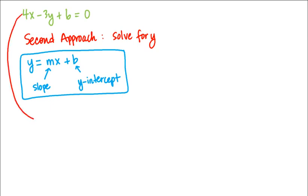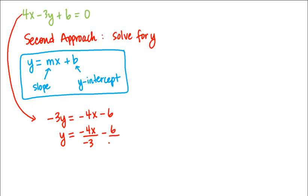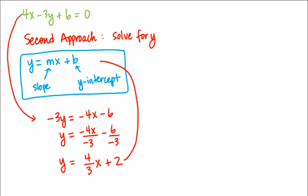So let's solve our equation for y. We have negative 3y is equal to negative 4x minus 6. Dividing both sides by negative 3 gives us y is equal to 4 thirds x plus 2. Comparing this to slope-intercept form, we see that m, or the slope, is 4 thirds, and b, or the y intercept, is 2.